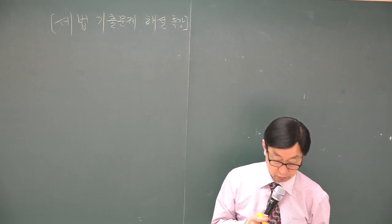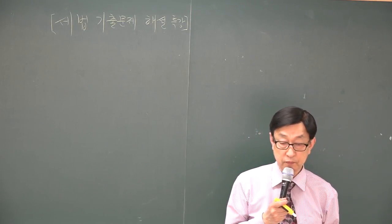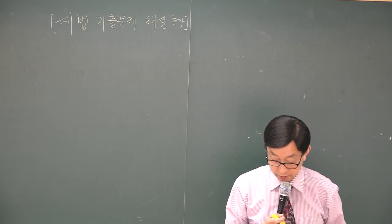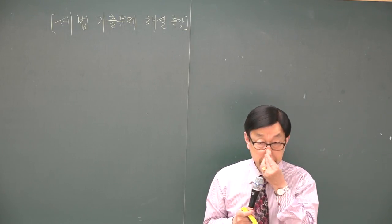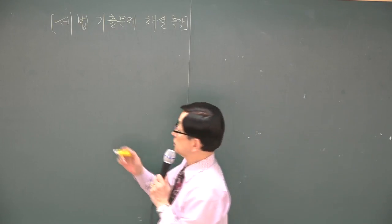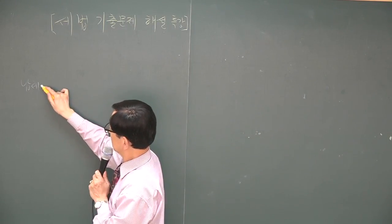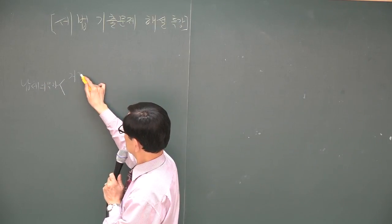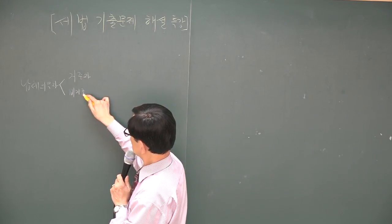교재 페이지, 소득세 부분, 제일 뒤쪽. 양도소득세 부분. 찾았죠. 1번 한번 보세요. 그 1번은 납세의무자입니다. 납세의무자에 대해서 시험이 나왔습니다. 세금의 납세의무자는, 소득세는 거주자와 비거주자로 구분합니다.